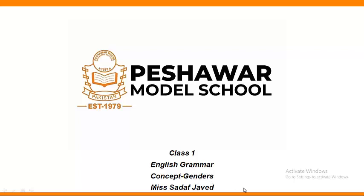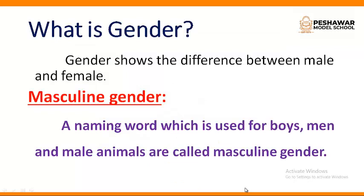Now what is gender? Gender shows the difference between male and female. Dear students, you know that Allah Almighty has created men and women, whether in the animals or whether in the human beings. Now there are four types of gender, but we are going to study three types.